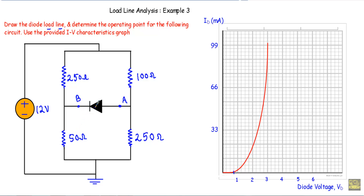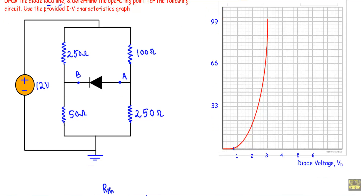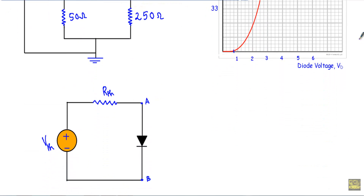Therefore, I first have to reduce the entire network across the A and B terminals to a Thevenin equivalent network, so that we get a circuit in which the voltage across A and B equals the Thevenin voltage and the resistance across A and B equals the Thevenin resistance.